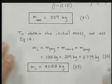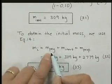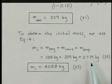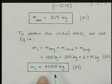And then to obtain the initial mass, the whole thing altogether, we add payload mass, which is 1,000, the inert mass, 309, and propellant mass, which is 2,779, to get a grand total of 4,088 kilograms. So that completes the discussion of performance of single-stage rockets and rocket fundamentals.